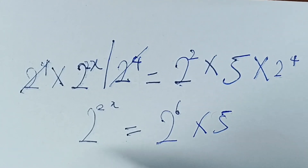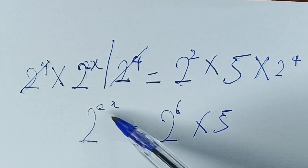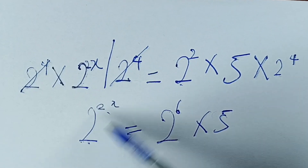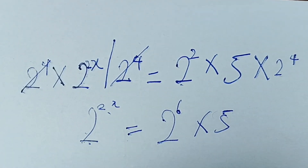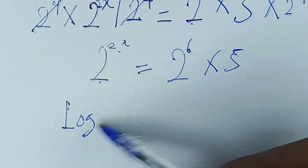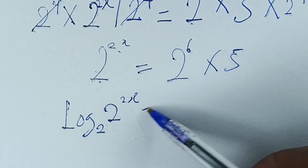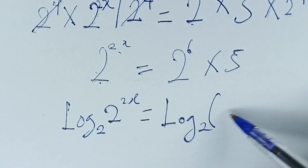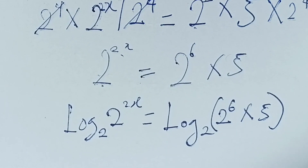The next step is to take the logarithm in the base of the number carrying the variable. The number carrying the variable is 2, so we take the logarithm base 2 of both sides: logarithm base 2 of 2 to the power 2x, equal to logarithm base 2 of 2 to the power 6 times 5.